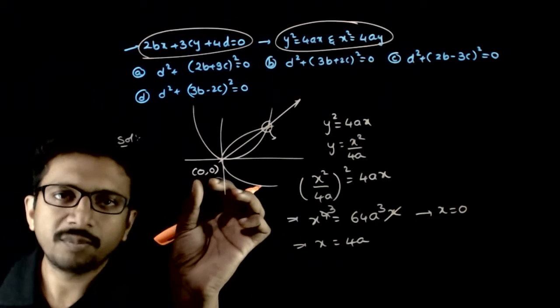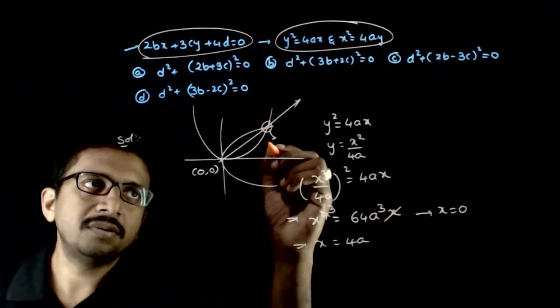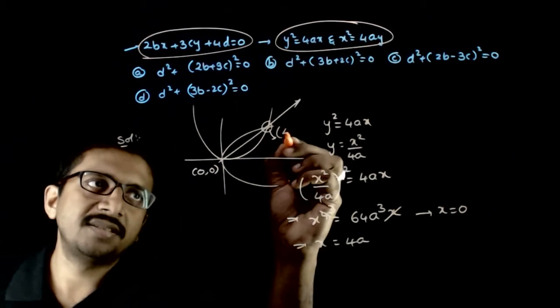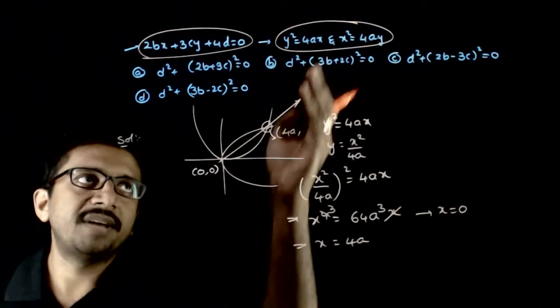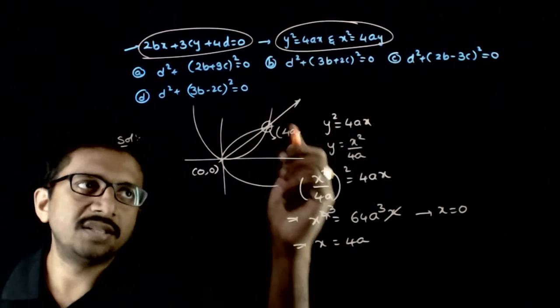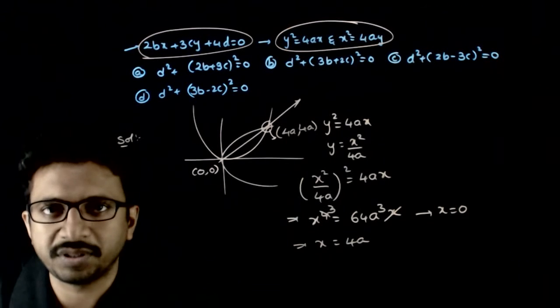So for one point of intersection x equals 0, hence y equals 0. For the second point of intersection x equals 4a and if x equals 4a, y is also equal to 4a. So that will be the point of intersection.